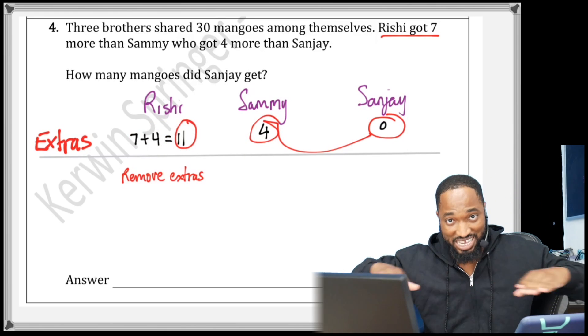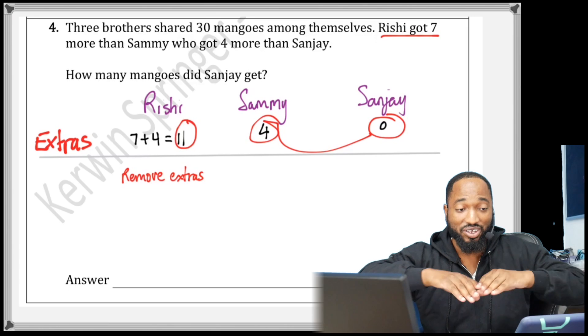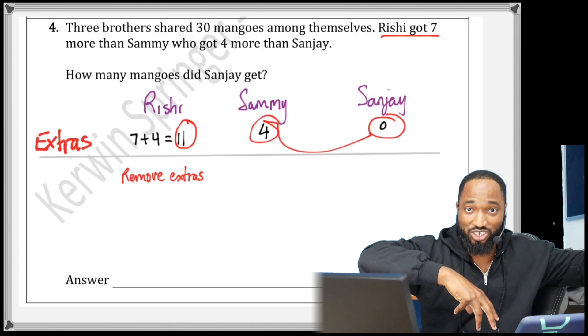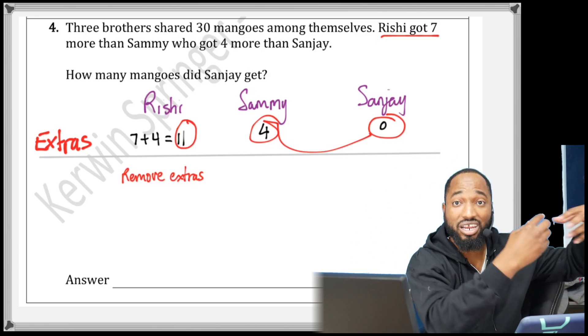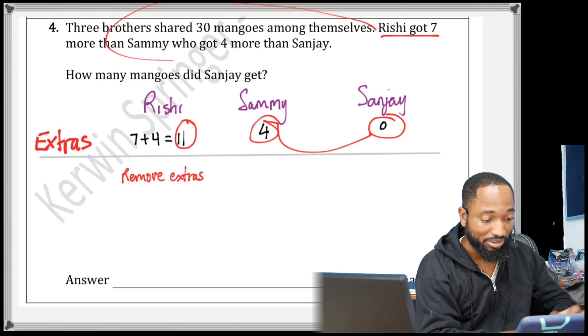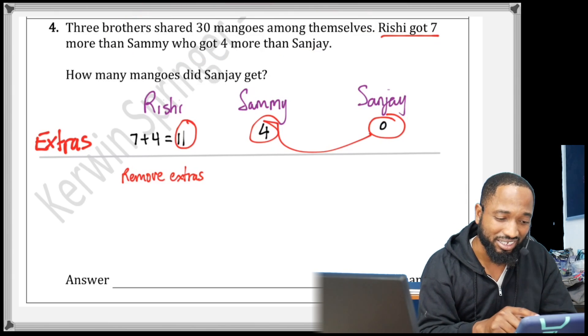Than the base, the equal sharing. After you share it equally, there's some extras to give out. Rishi would have to collect 11 to make the statement correct. Is that making sense?